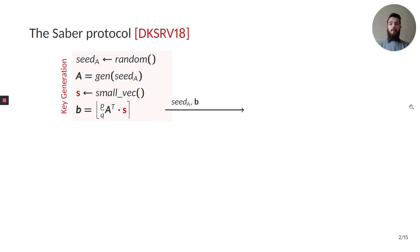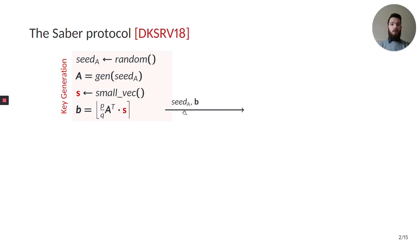Let's quickly see how the Saber protocol works. There are two variants: a public key encryption scheme and a key encapsulation mechanism. For the former, during key generation, the first party generates a random seed from which they can then compute a matrix A. Then they generate the secret S, which is a vector consisting of polynomials with small coefficients. Lastly, they compute the vector B by multiplying the transpose of A times the secret S, rescaling it and rounding it. The public key then consists of the vector B together with the seed from which A can be recomputed.